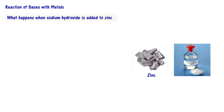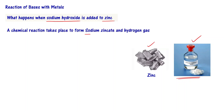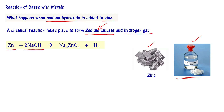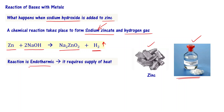What happens when sodium hydroxide, NaOH, reacts with zinc? If we take a few particles of zinc and pour a little sodium hydroxide into a beaker, a chemical reaction takes place to form sodium zincate and hydrogen gas. The chemical equation is: Zn + 2NaOH → Na₂ZnO₂ + H₂. H₂ is the gas produced.